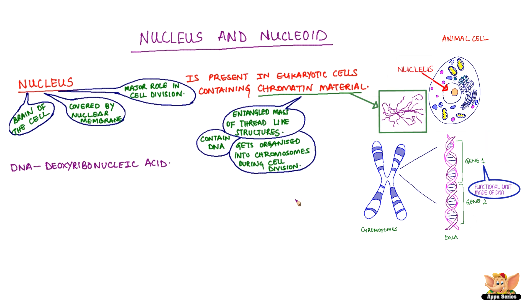Nucleus is very important and plays a major role in cell division because the chromosomes in the nucleus determine the way the cell will develop and the form it exhibits at maturity.